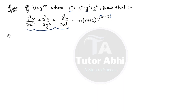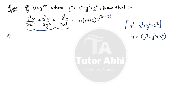We have v = r^m given, and r² = x² + y² + z² is given in the question. So we can find r and hence r^m. Therefore, v = (x² + y² + z²)^(m/2).